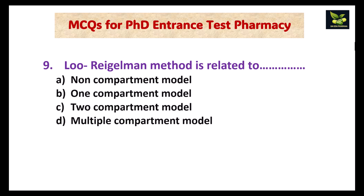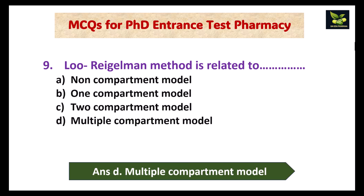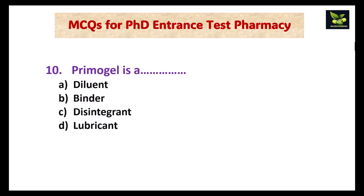The Loo-Riegelman method is related to — this question is from biopharmaceutics. The options are: A non-compartment model, B one-compartment model, C two-compartment model, or D multiple compartment model. The answer is D, multiple compartment model.